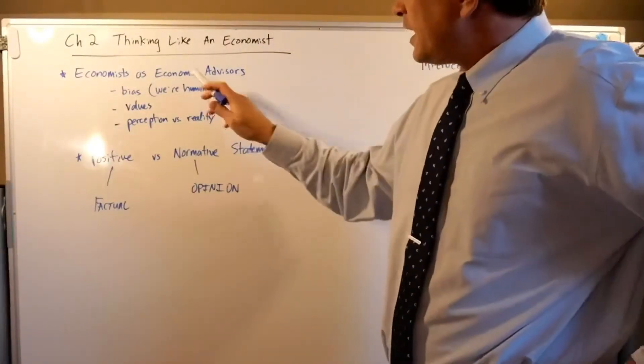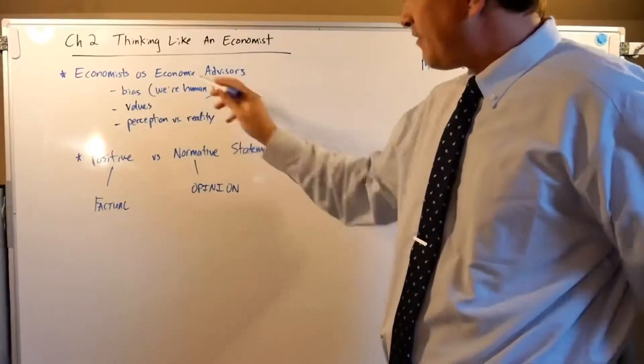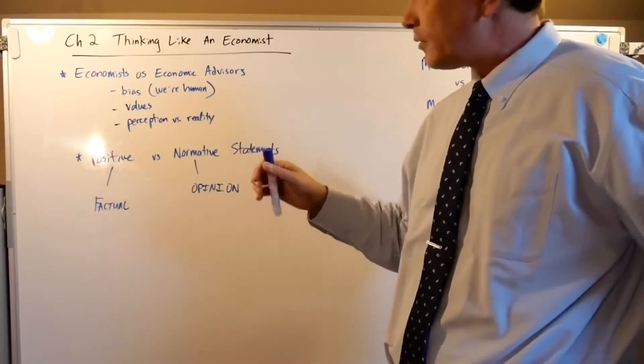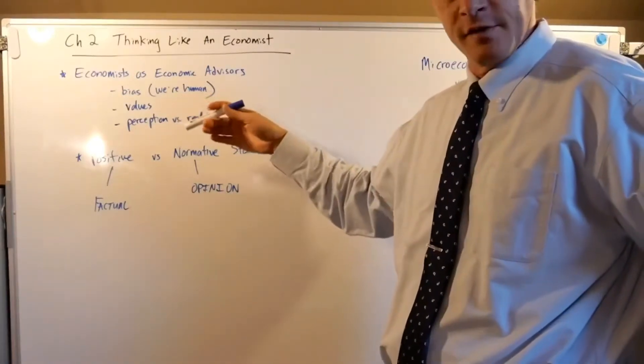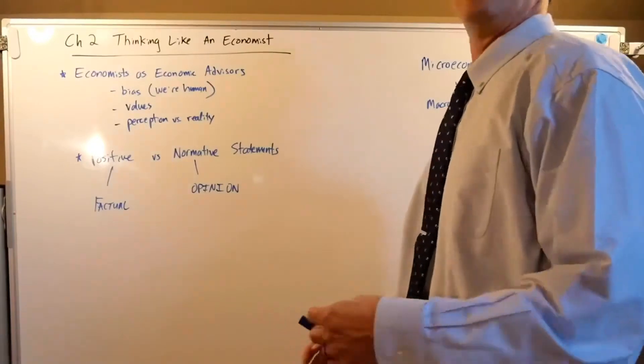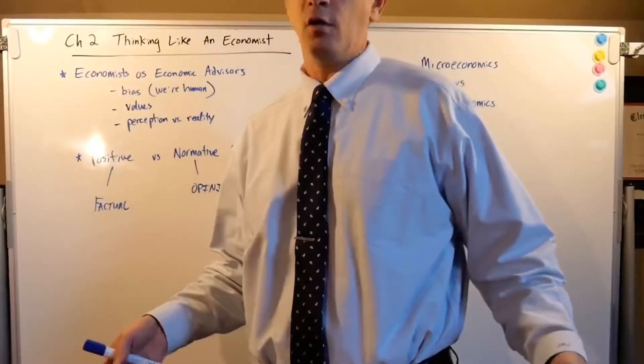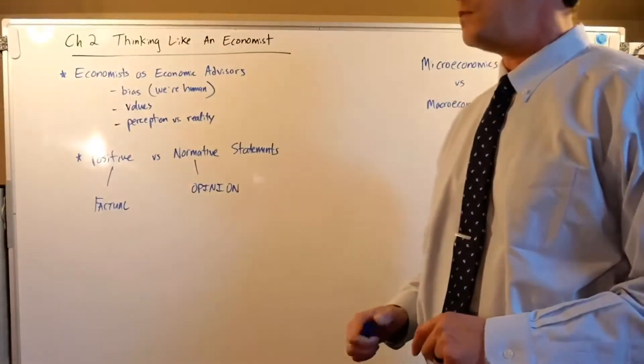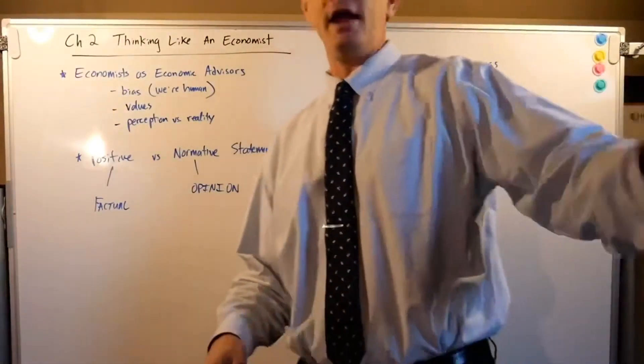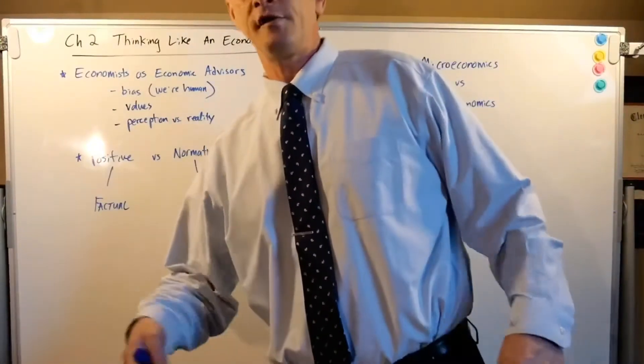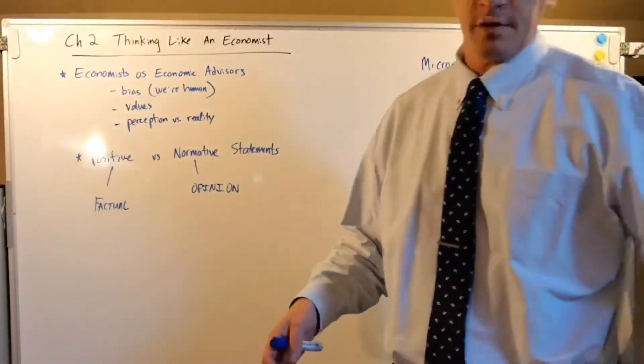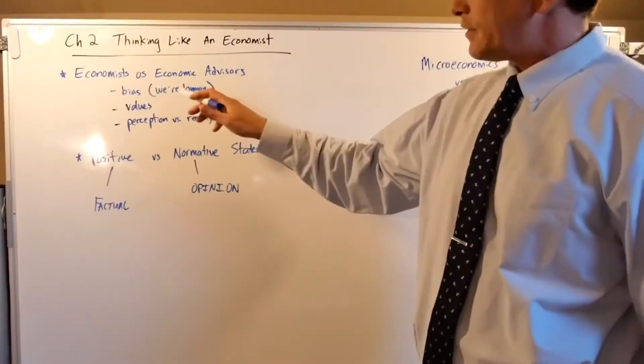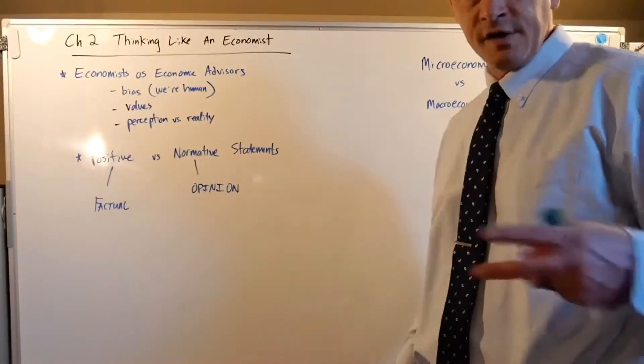But economists are people, okay? So they have bias. We're human. So number one, we can be wrong. But number two, we can also be biased. There might be something in our upbringing that makes us value inner city urban development over, say, tax breaks for the rich, or helping out entrepreneurs who have made it versus helping people who are not as aggressive with their portfolios. So there's bias. People have different values.